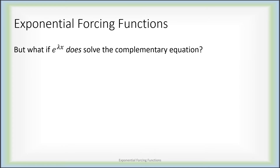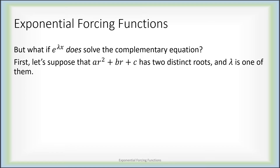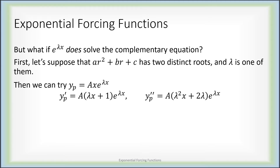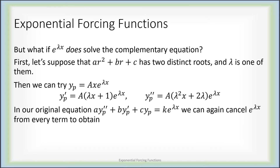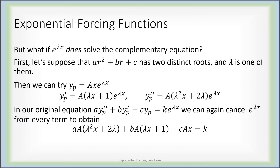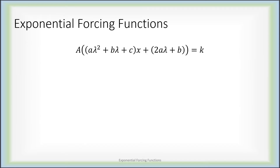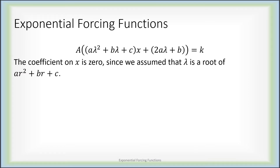But what if e to the lambda x does solve the complementary equation? Suppose that Ar² + Br + C has two distinct real roots and lambda is one of them. Then instead of just A times e to the lambda x, we would try A x e to the lambda x and compute its first and second derivatives. We go back to the original equation and we're still going to be able to cancel an e to the lambda x from every single term, and we end up with an expression where we factor capital A out of the left. There's still an x left, but the coefficient of x is assumed to be zero since lambda was a root of Ar² + Br + C. So we end up with just A times (2A lambda + B) equals k.